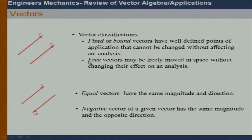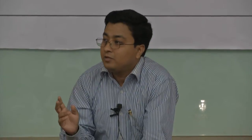First of all, as we all know, vectors can be of two types: fixed vectors and free vectors. Fixed vectors have well-defined points of application that cannot be changed without affecting an analysis. Whereas a free vector can be freely moved in space. A couple moment is a free vector — so couple is a free vector.